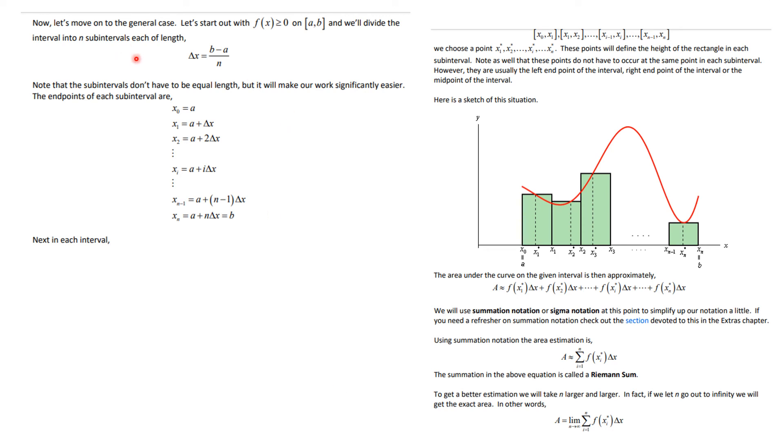Now let's talk about what we do in the general case. So if we start out with f(x) being greater than or equal to zero on AB and we divide it into sub intervals that are of equal length. Then when I start at x sub zero is a, x sub one is a plus delta x, x sub two is a plus two delta x and so on. The ith interval is a plus i times delta x. The next to last one is a plus n minus one times delta x and the last one is going to be the point b but that is a plus n times delta x. Now we're going to pick points in each of those sub intervals that is where we're going to be evaluating those. These points will define the height of the rectangle in each sub interval. Notice that these points do not have to occur at the same point each sub interval.